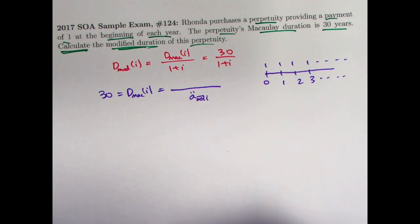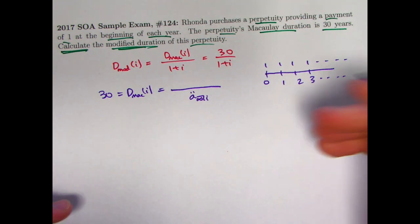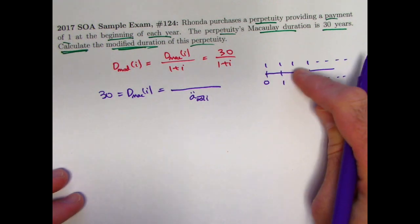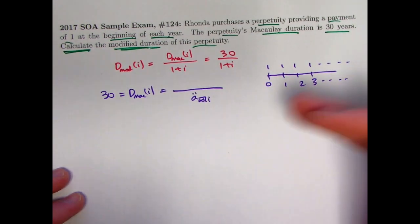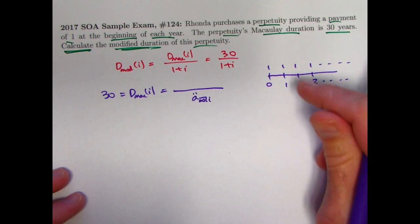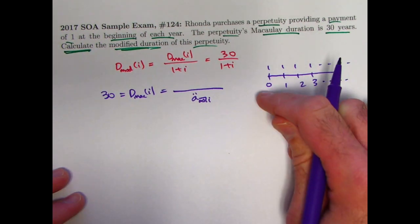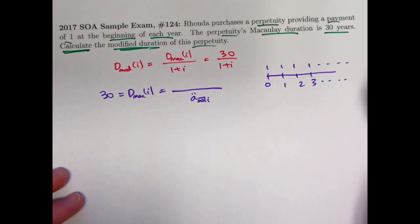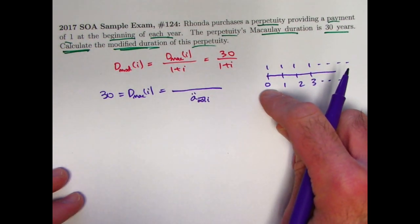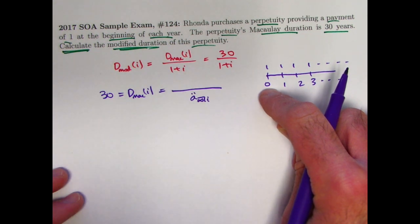But what about the numerator? Recall that in the numerator you have a sum where the payment gets multiplied by the time of payment and also discounted back to time 0. So take the payments of 1, discount it back to time 0, and multiply those present values by the times of payments. The first one, though, is a time of payment of 0, so we can ignore it.